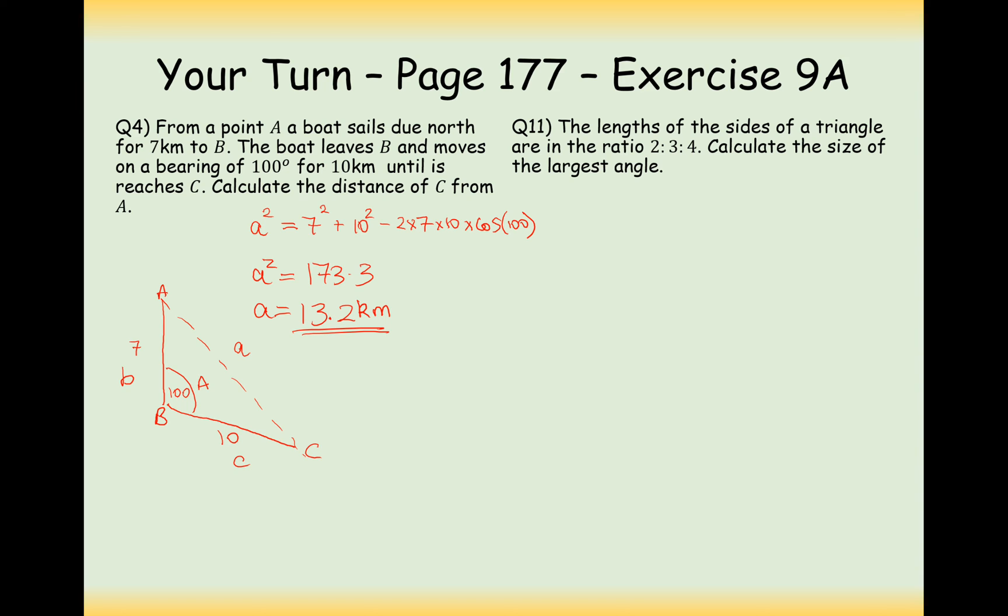So that's our final answer to question 4. Question 11 is a problem solving question. The lengths of sides on a triangle are in a ratio of 2 to 3 to 4. Find the size of the largest angle. So let's draw out a triangle that roughly describes that. We want to find the size of the largest angle so that must be the angle here that's opposite the largest side. So substitute these values straight into the formula and we get 4 squared equals 2 squared add 3 squared minus 2 times 2 times 3 times cos of A.